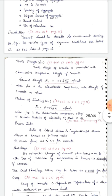Regarding durability, concrete should be durable — designed to last up to 100 years. Concrete should be durable to the environment during its life. The various types of exposure conditions are listed in IS 456 Table 3, page 80.